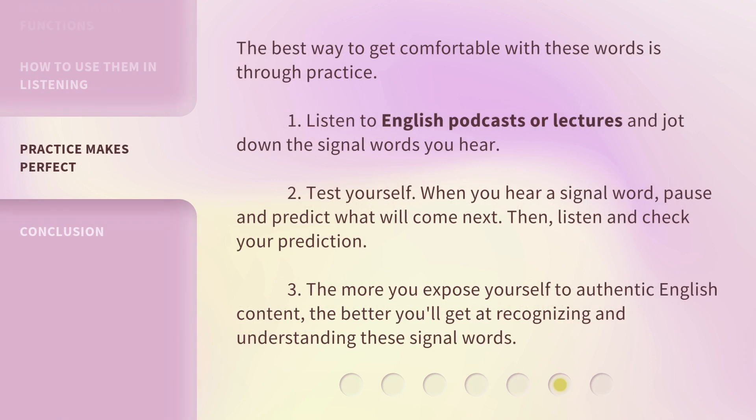The best way to get comfortable with these words is through practice. 1. Listen to English podcasts or lectures and jot down the signal words you hear. 2. Test yourself. When you hear a signal word, pause and predict what will come next. Then listen and check your prediction. 3. The more you expose yourself to authentic English content, the better you'll get at recognizing and understanding these signal words.